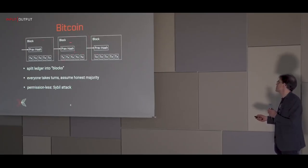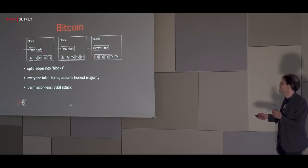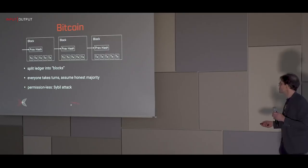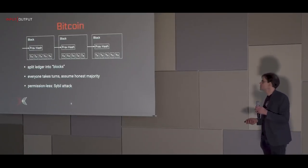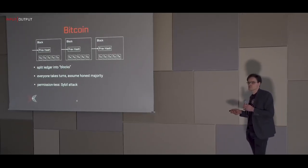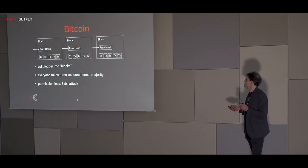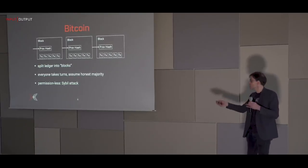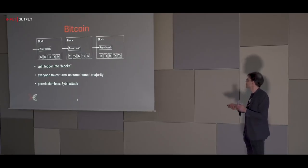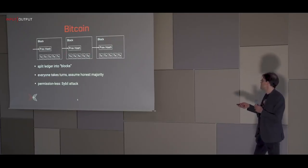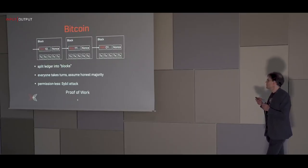If the system is permissionless — not checking identity — you can't prevent somebody from just registering multiple times. That's called a Sybil attack: someone could register 10,000 times and take 10,000 turns to everyone else's one, making it easy to revert all transactions. The solution Bitcoin uses is to add a cost for registering, in the form of an arbitrary mathematical puzzle.